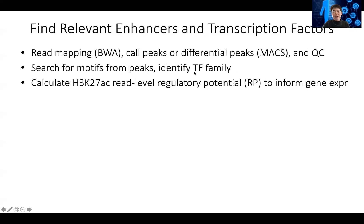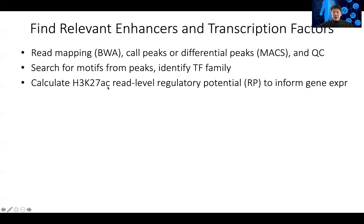Nearby K27 acetylation signals also indicate that strong transcription factors are binding to nearby regions and promoting expression of that gene. For example, if motif search finds the whole GATA family as potentially interesting, using K27 acetylation regulatory potential you might see that in this cell it's actually GATA3 that is activated, but not GATA1, 2, 4, 5, or 6. This can help inform on the specific gene expression.